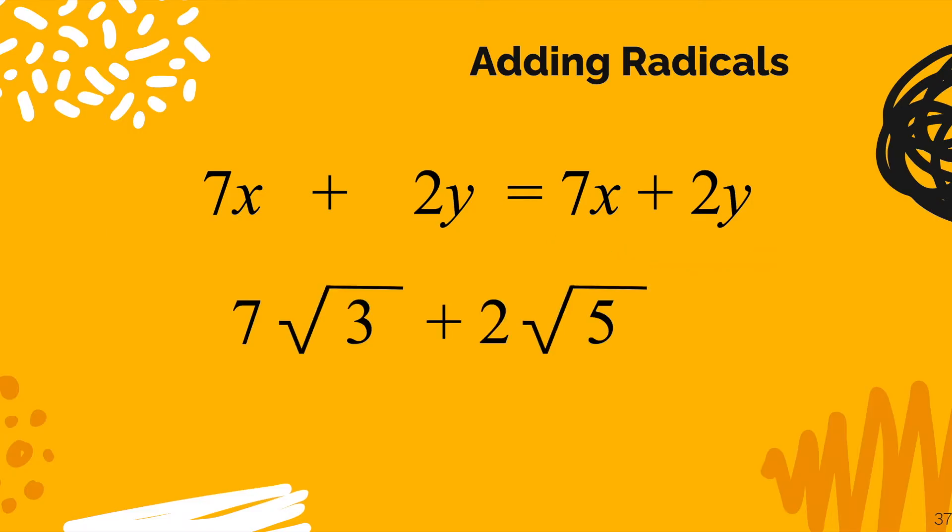So if I gave you 7 radical 3 and then someone brought in 2 radical 5 and we want to add it all up. What can we do to simplify all this? Absolutely nothing. It is already simplified.